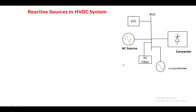This is the layout of the HVDC transmission system, showing the AC source, the bus, and the converter. The AC filter is used to filter out harmonics in the source current. This AC filter can also supply reactive power to the bus for small load variations. The SVC, or static VAR compensator, can supply reactive power to the bus for large load variations.